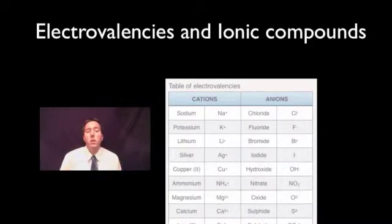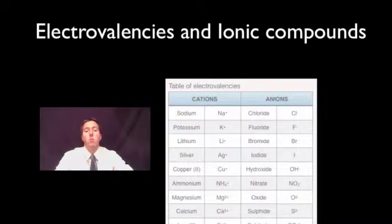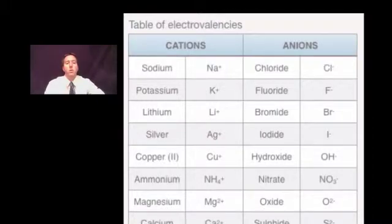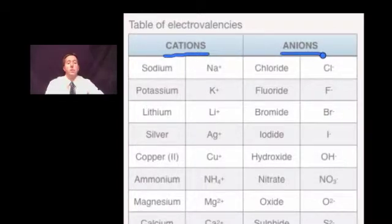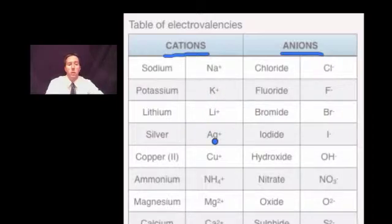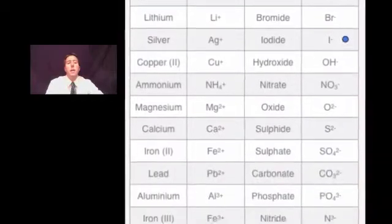An ionic compound is when two different ions are attracted to each other to form a compound. Here I've got a whole bunch of cations — positively charged ions — and negatively charged ions. Sodium is Na+, potassium is K+, lithium has a charge of one, silver has a charge of one, chlorine is Cl-, and fluorine has a single charge of minus one.